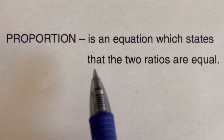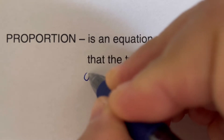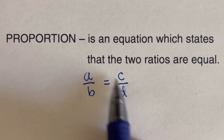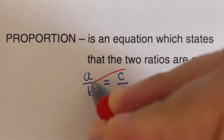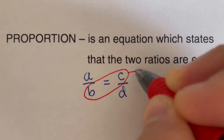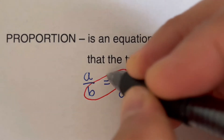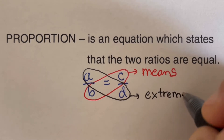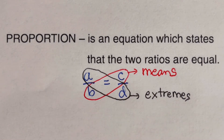Proportion is an equation which states that two ratios are equal. So if we have A over B equal to C over D, this whole setup is called a proportion. Both B and C are called the means, while A and D are the extremes. So B and C are the means, and A and D are the extremes.